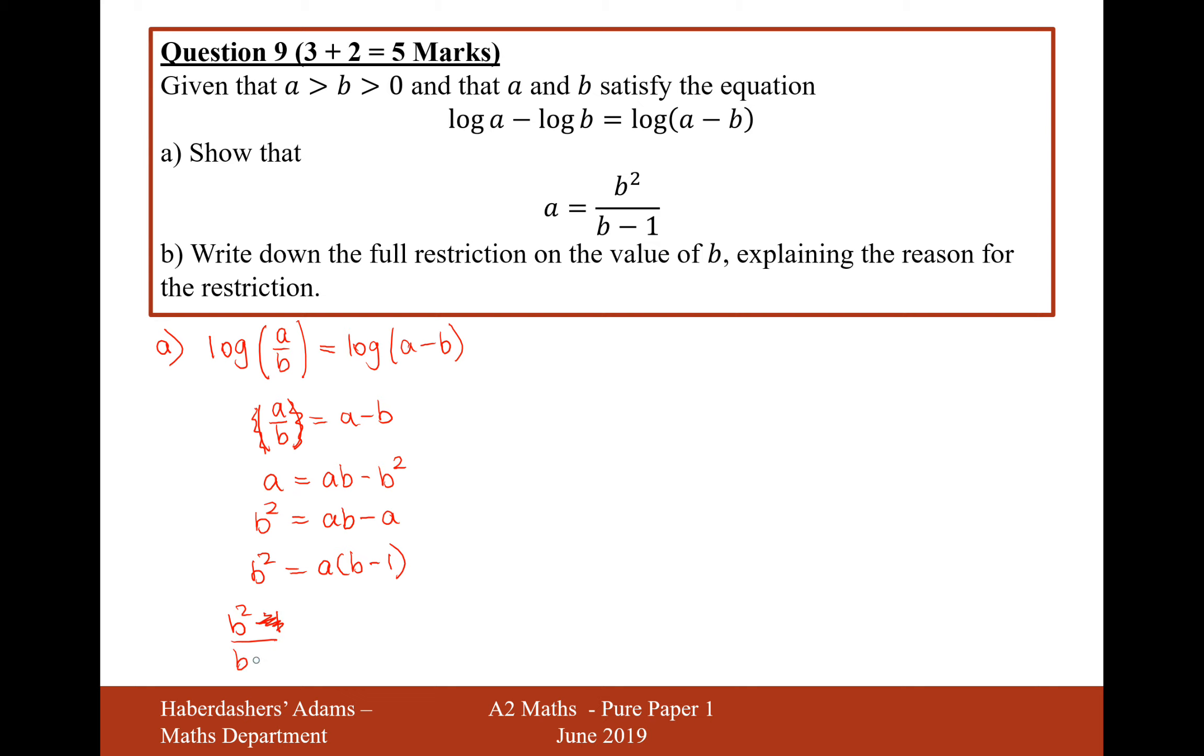So b squared over b minus 1 equals a. So therefore, a is equal to b squared over b minus 1. Lovely. There we are. So that's the answer to part a.